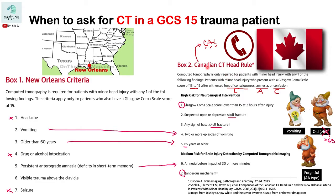So for the Canadian CT Head Rule, you have seven criteria total — three of which are present in the New Orleans criteria, represented by these three dwarves.